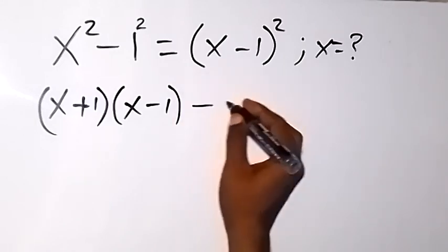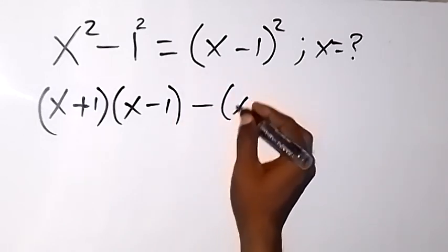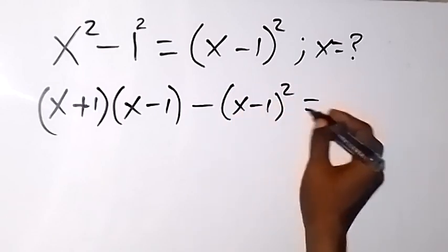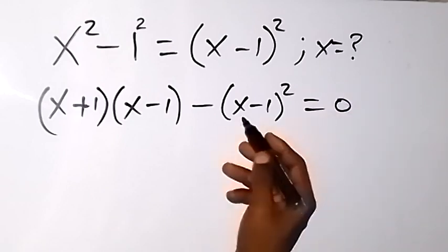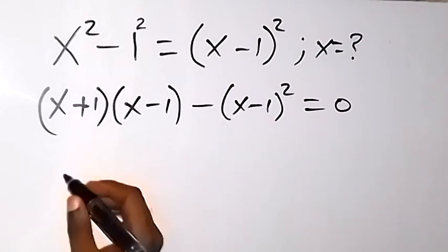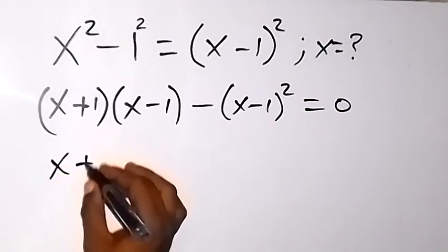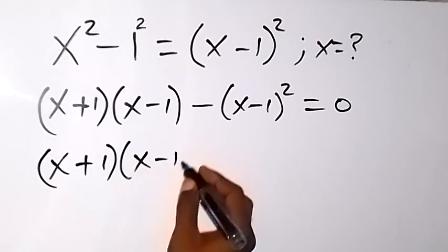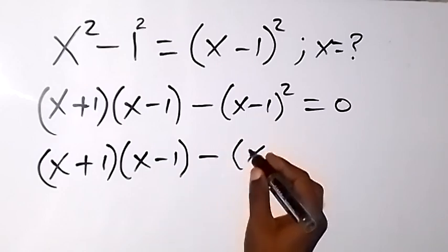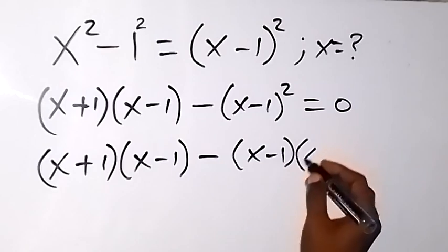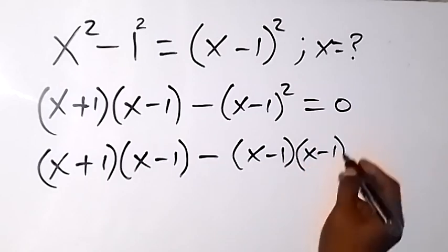Then let's take the right-hand side to this place as well, minus (x-1)² then we equal to zero. Now also when we square a number, it means it's multiplied by itself. So we can separate this and we have (x+1)(x-1) minus (x-1)(x-1).